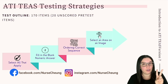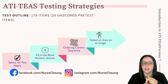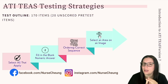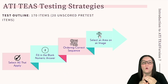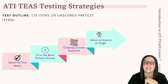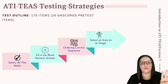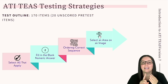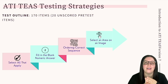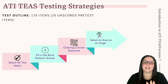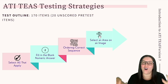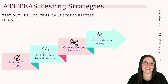Number two, fill in the blank numeric answer. Number three, ordering correct sequence. And number four, select an area of an image. We will now discuss strategies for answering all of these different types of questions.